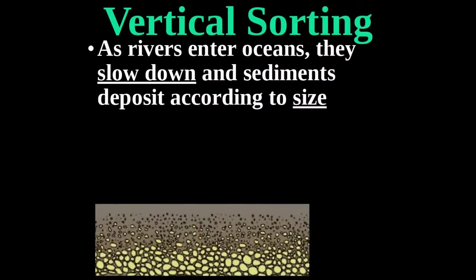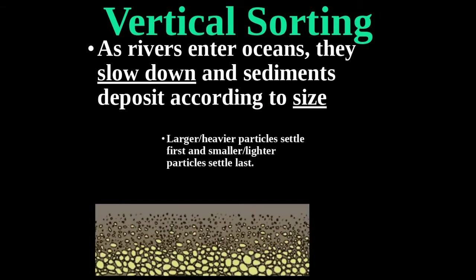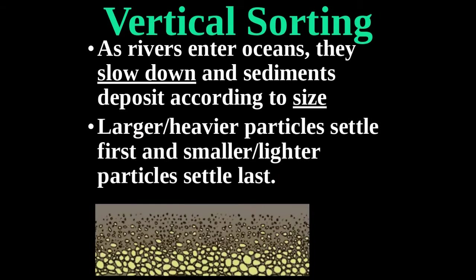As the river enters a large body of water, additional sorting occurs — vertical sorting. Unlike horizontal sorting along the horizon, vertical sorting is up-and-down. The same rule applies: larger, heavier particles get deposited first in a large body of water, and then the smaller, less dense particles settle on top. In your notes under vertical sorting: larger, heavier particles settle first — coarse particles settle first, fine particles settle last.